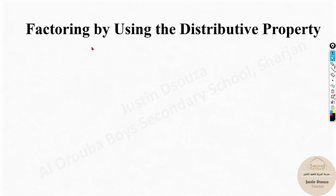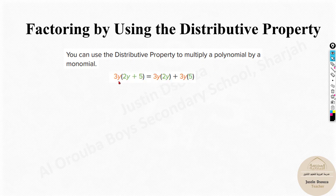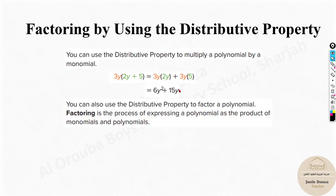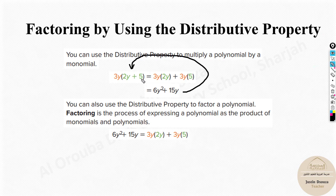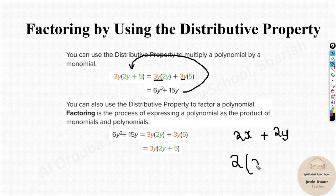The keywords are: factoring, factoring by grouping, and factoring by distributive property. For example, 3y(2y + 5) — you can multiply 3y with each term using the distributive property. You can also use the distributive property to factor back out, meaning you find the common term and extract it. Just like 2x + 2y — since 2 is common, you take it out and write 2(x + y).